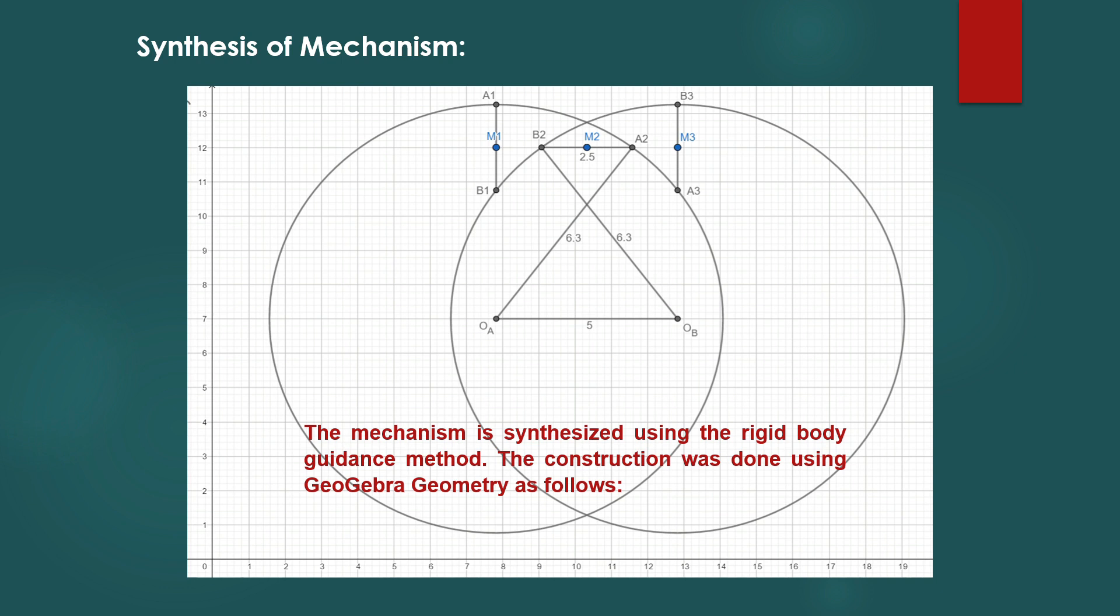Synthesis of mechanism. The mechanism is synthesized using the rigid body guidance method. Three different positions of the coupler as assumed were used for the graphical synthesis. The graphical construction was done using GeoGebra geometry tool. The following values of the linkage lengths, input angle and output angle were obtained from the graphical method.